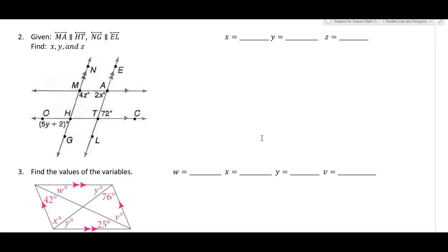For example two, this angle and this angle are alternate interior angles and we know those are congruent, so 2x equals 72. Divide by 2 — x is equal to 36. Plugging that back in gives us 72 degrees.